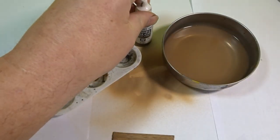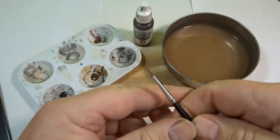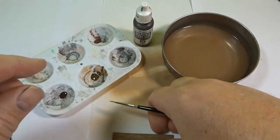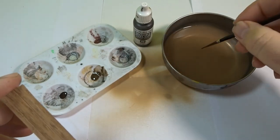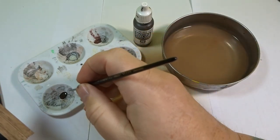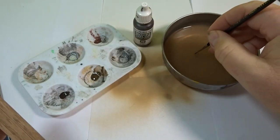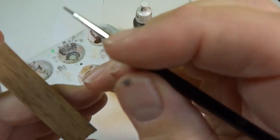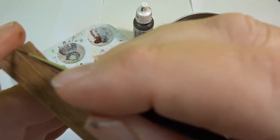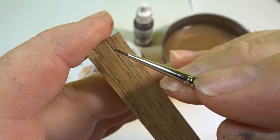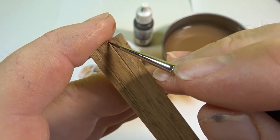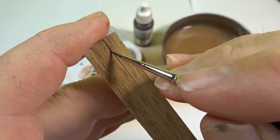And then we'll add a bit more detailing with Vallejo German Black Brown and here I'm using a finer brush. What we want to do is just create a little bit of shadow work, again with a wash consistency to the paint. We'll put that into the grooves and you can also add a few little splotches here and there just to create the idea of some dirt.